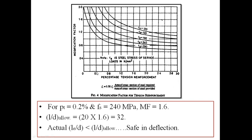For example, if I take 0.4% steel, for FS = 290 the modification factor is around 1. But as FS goes on decreasing — that means as we go to the upper curves — for FS = 240 the modification factor is between 1.2 and 1.6.